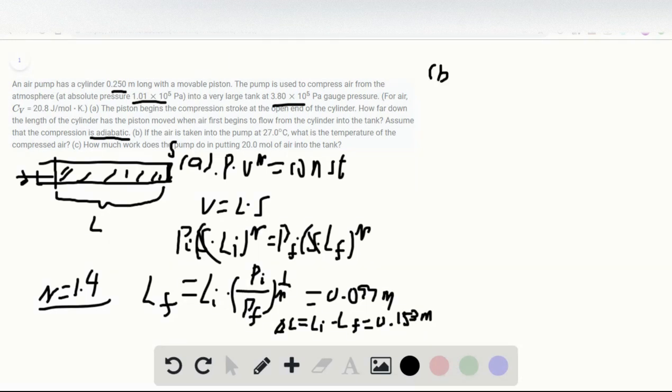And for part B, so we know the initial temperature and we want to find out the final temperature. We already have this formula. This is a constant, and by applying the other one, PV equal to nRT, you will obtain this formula. The T to the gamma over P to the gamma minus 1 is a constant.